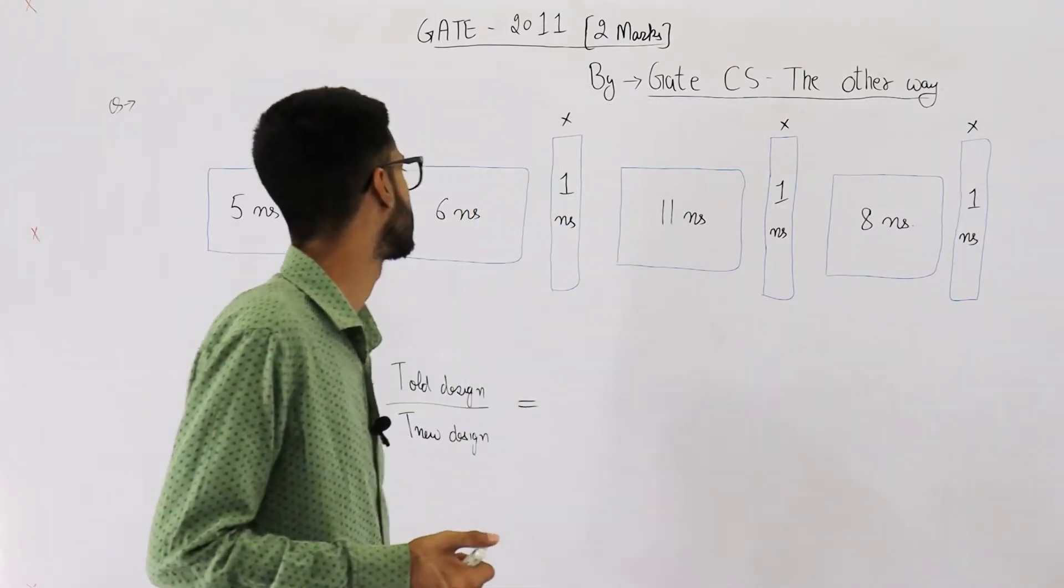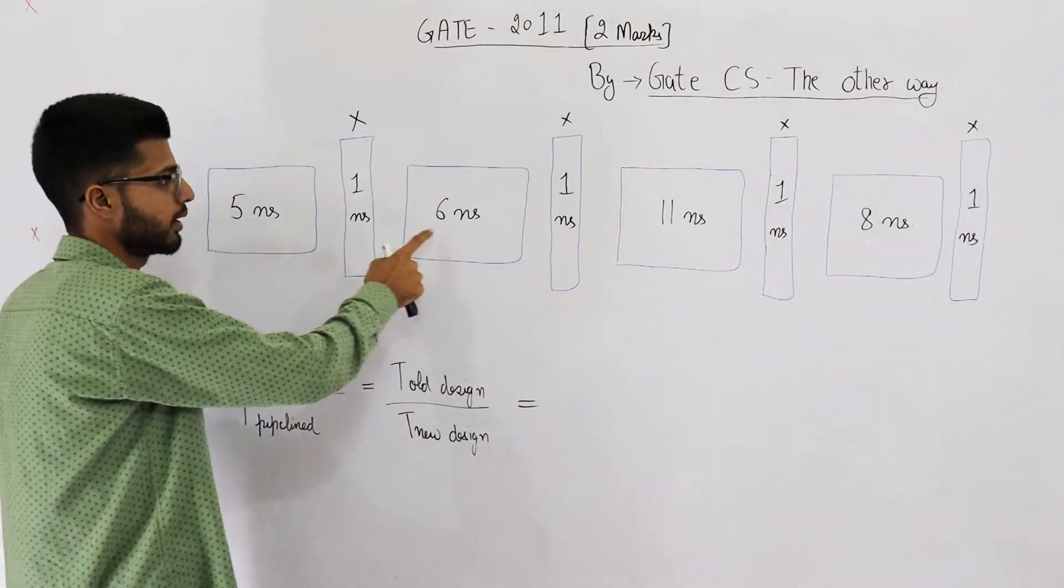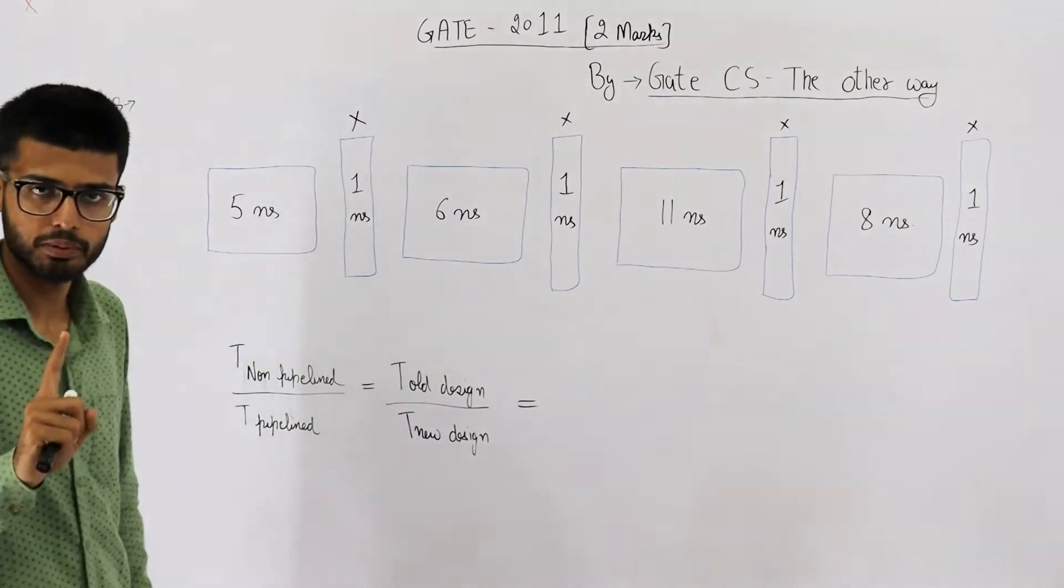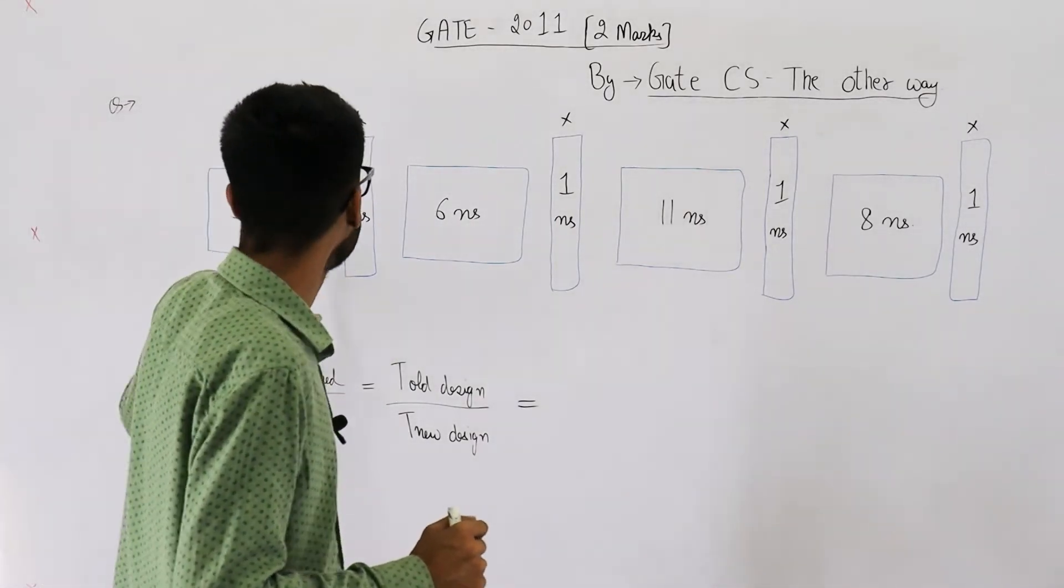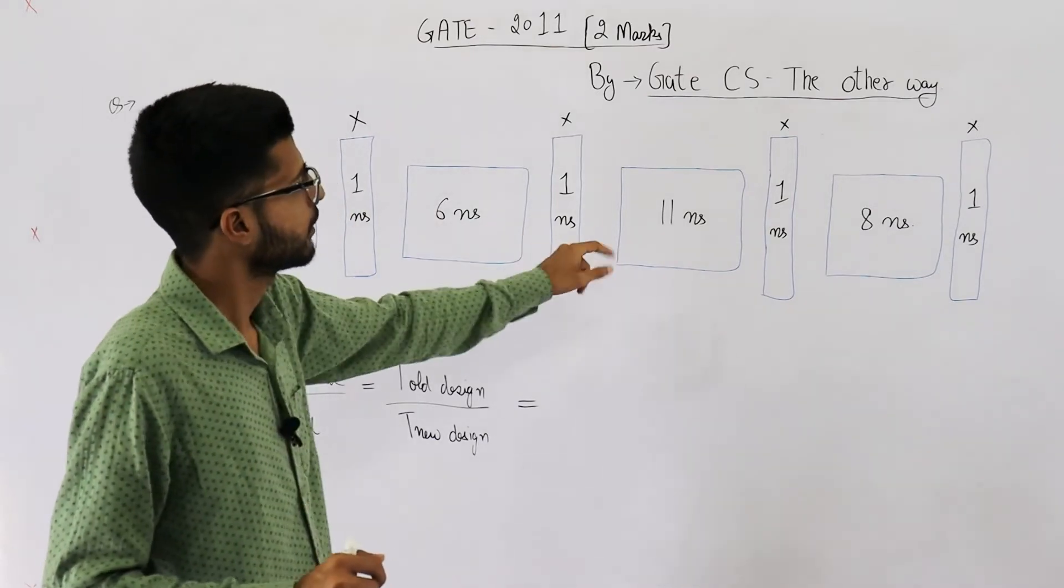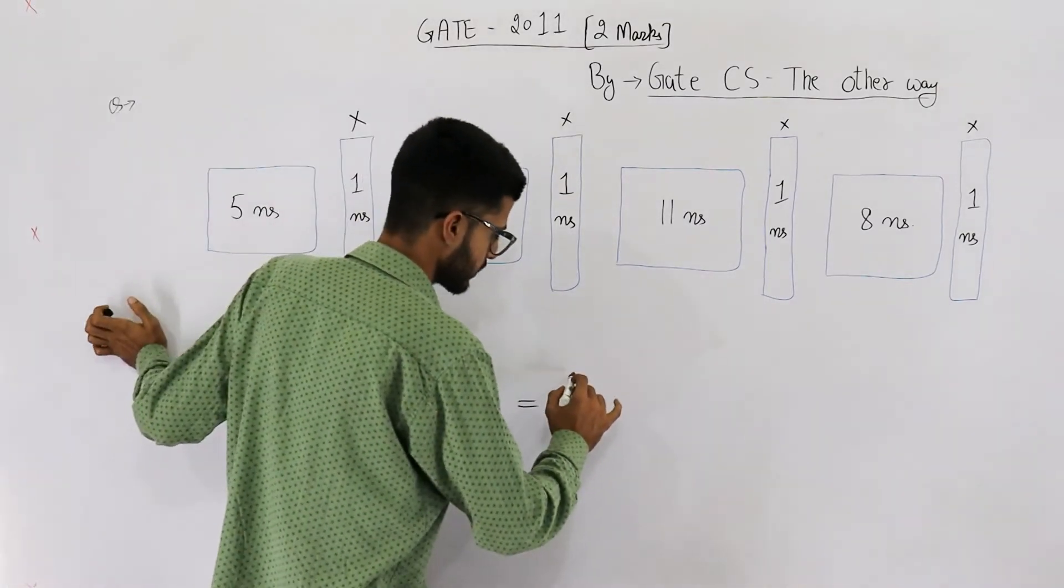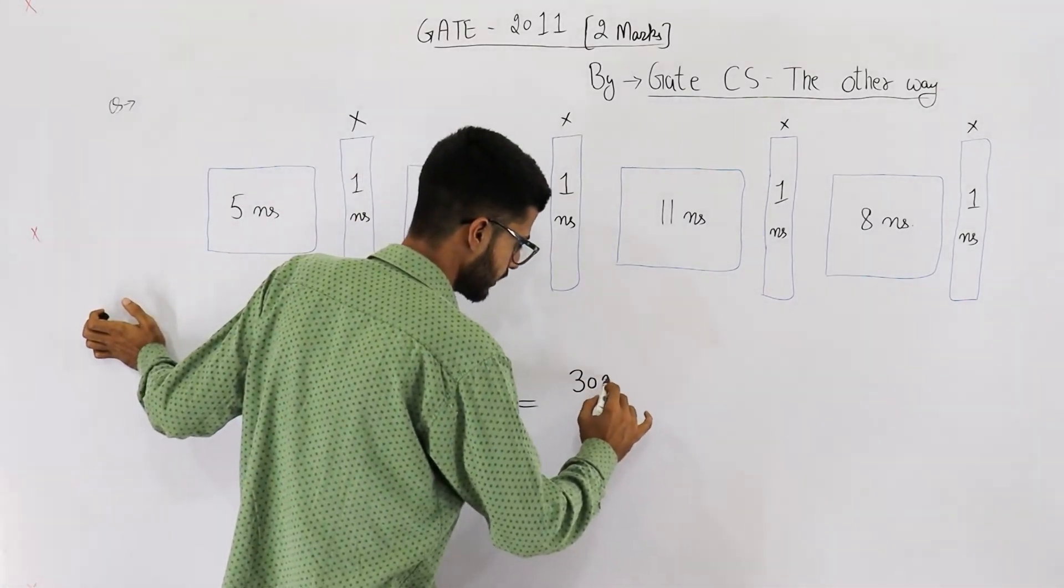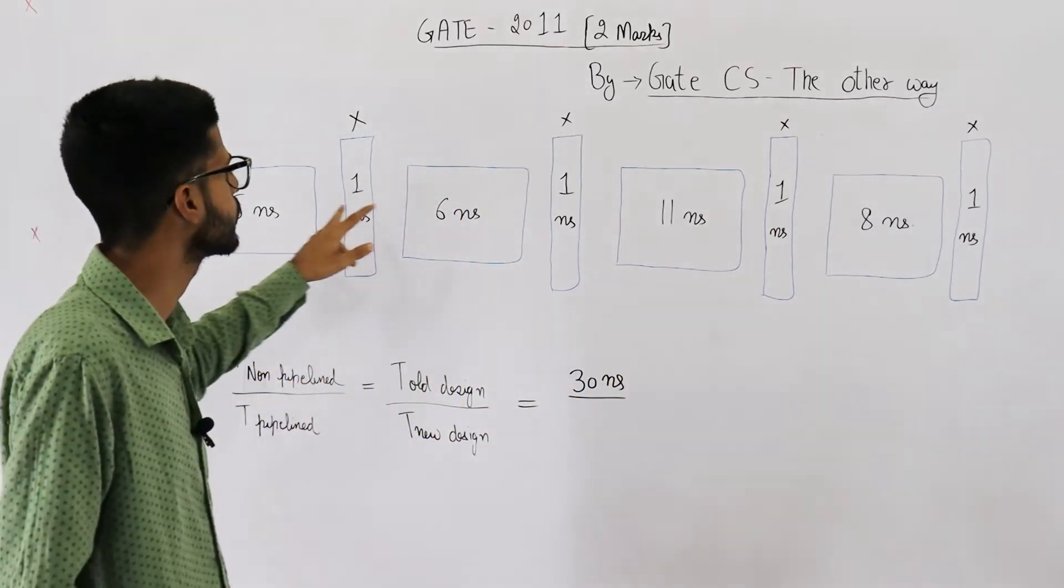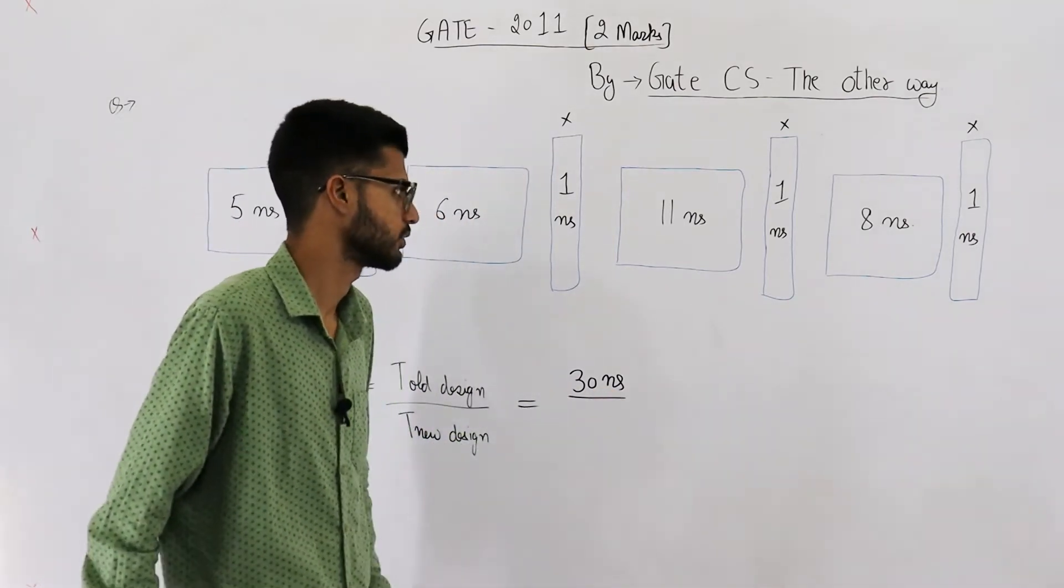That's why buffers are not required. That means non-pipelined version will take 5 plus 6 plus 11 plus 8 nanoseconds to implement one instruction. That means it comes out to be 5 plus 6 is 11, plus 11 is 22, plus 8 is 30. That means non-pipelined version is going to take 30 nanoseconds for one instruction because one instruction is going to pass through all the stages. That's why it takes 30 nanoseconds.